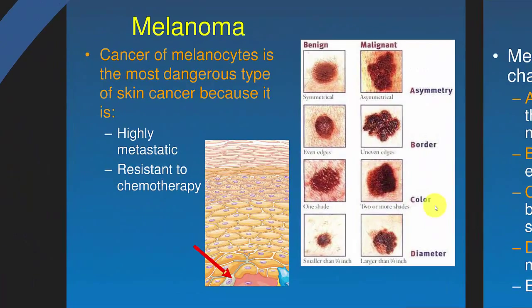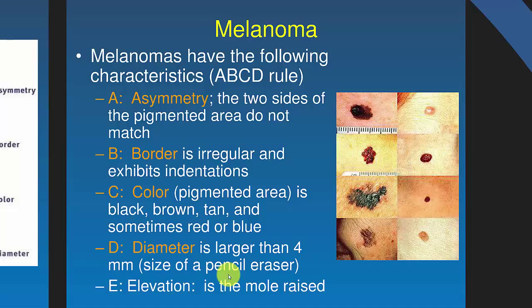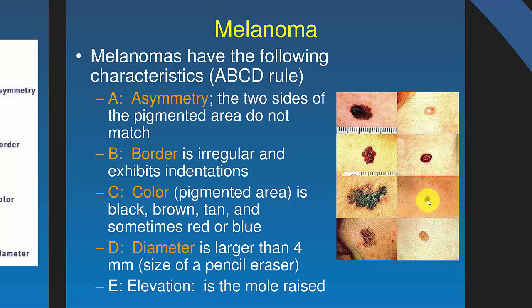The worst of the three is melanoma — cancer of the melanocytes. It's highly metastatic and resists chemotherapy. It's very important to catch melanoma early, because once it's about 4 millimeters thick, it's probably already metastasized. The ABCDE rules help determine whether something is a mole or melanoma: A is for Asymmetry — the two sides of the lesion are different. B is for Border — a mole has a smooth border, while cancer has an irregular border with indentations. C is for Color — multiple color variations suggest melanoma; one uniform color suggests a benign mole. D is for Diameter — less than 4 mm (about the size of a pencil eraser) is likely a mole; bigger suggests melanoma.